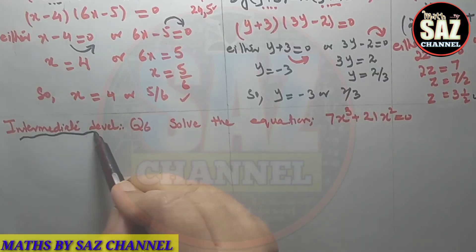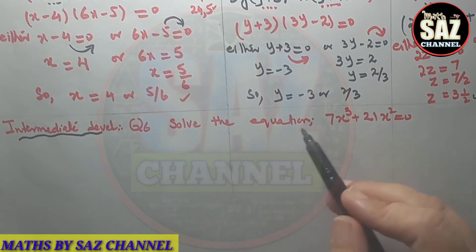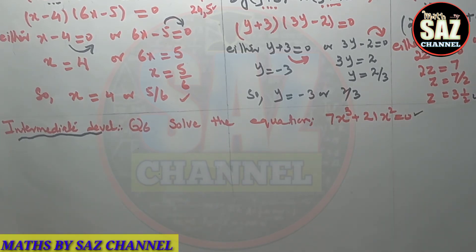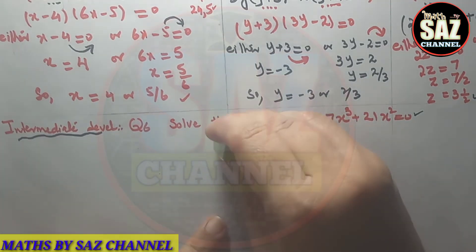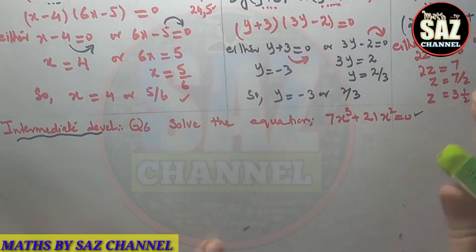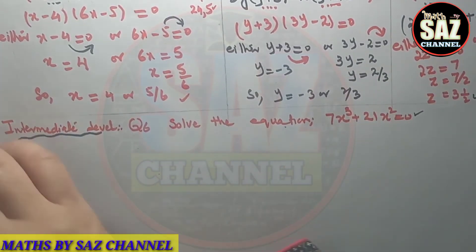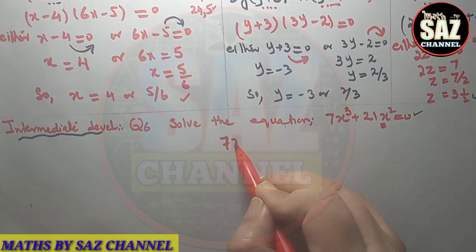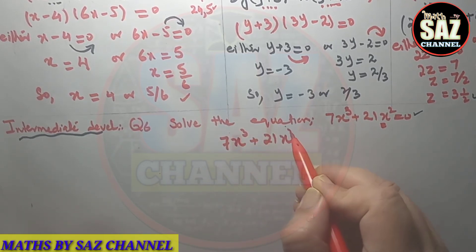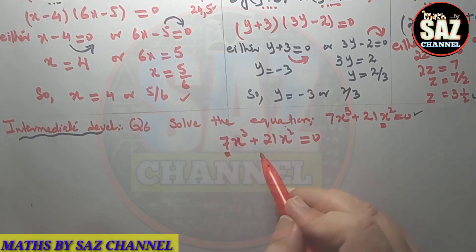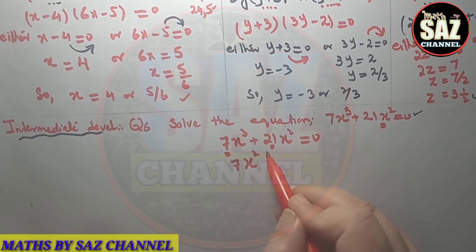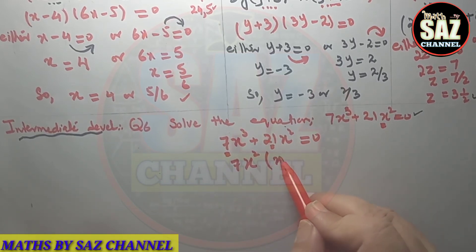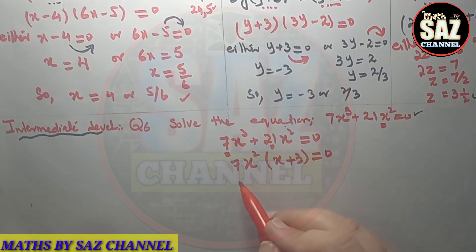I hope you are clear about all these questions. Moving to the next question: we'll solve intermediate level question number 6, which says solve 7x³ + 21x² = 0. This is a really easy question. The numbers 7 and 21 share a common factor of 7, and from the letters x³ and x², we can extract x² as a common factor. So we factor out 7x²: 7x²(x + 3) = 0.